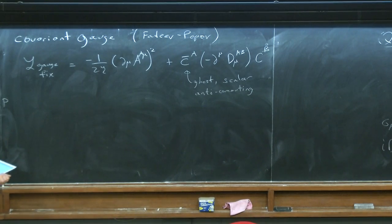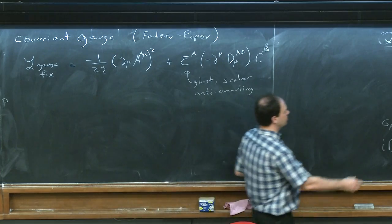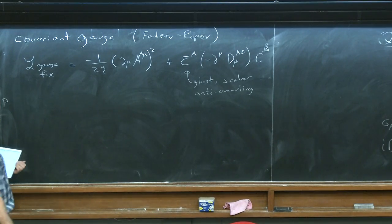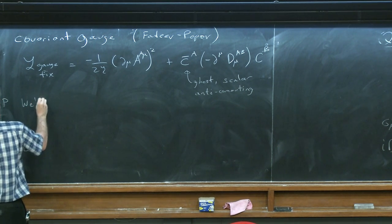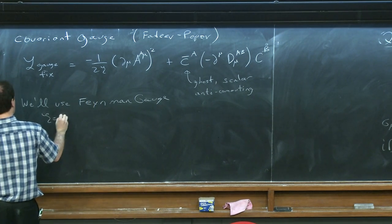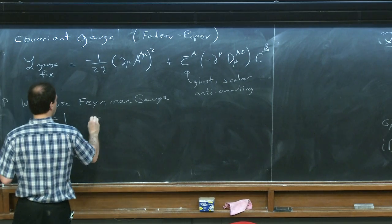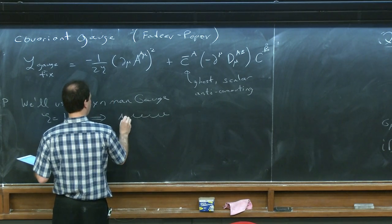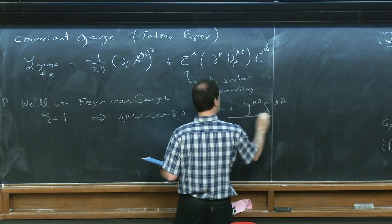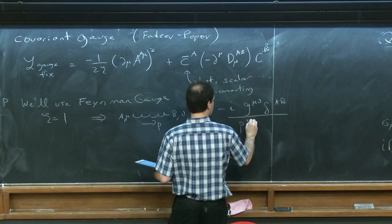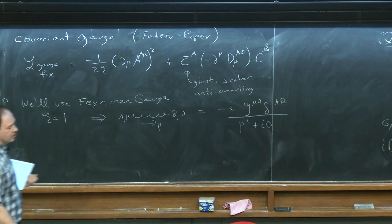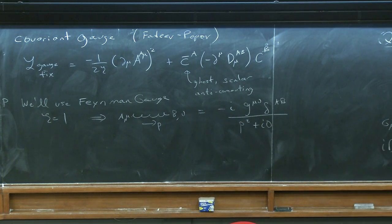You actually need these terms to construct the gluon propagator. If you just start with the kinetic term for the gluon field alone, you can't invert it to get the propagator. After including the gauge-fixing terms, you can invert it. For our discussion, we'll stick with Feynman gauge where the gauge parameter xi equals 1. If you invert the propagator for xi = 1, the gluon propagator from A-mu to B-nu is minus i times g-mu-nu times delta-AB over q-squared — a very simple propagator, the same as the Feynman gauge propagator in QED.